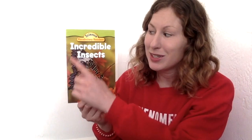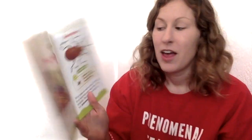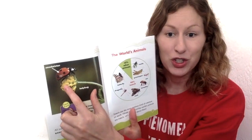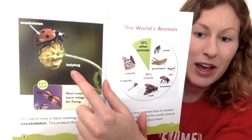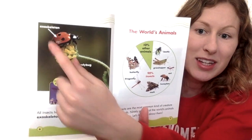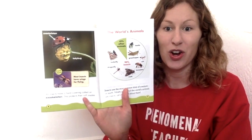Nonfiction books have text features. Text features can include titles. They can also include diagrams. They can also include real pictures with captions. These captions will point to things and tell you what different things are on the picture.